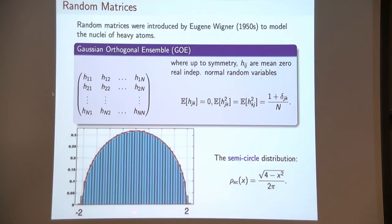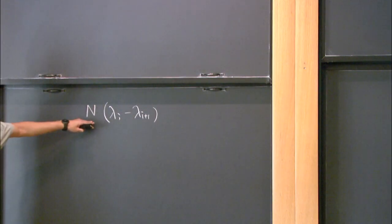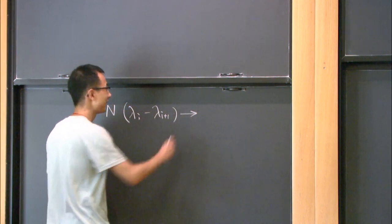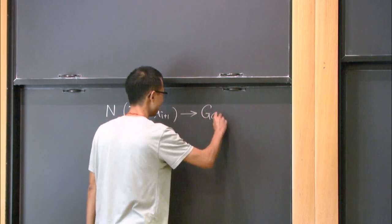Because it's an n by n matrix, there are n eigenvalues in this interval from minus two to two. The typical distance between two adjacent eigenvalues is roughly 1/n, so we should rescale this quantity by n. Now this is an order one quantity. It turns out this quantity, as the size of the graph goes to infinite, converges to a random variable, now called the Gaudin-Mehta distribution.